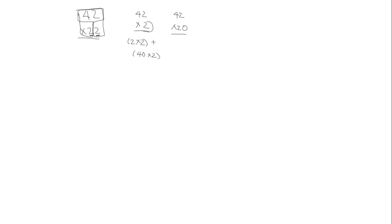So we've distributed the 2 over the 1s unit, which is 2, and the 10s unit, which is 4. So 2 times 2 is 4, and we're going to record that in our vertical writing of the number. 2 times 2 is 4, and then 40 times 2 is 80, so we'll put 80 here. So 42 times 2 is 84 as our first partial product.